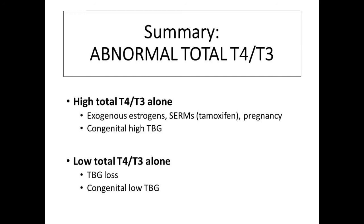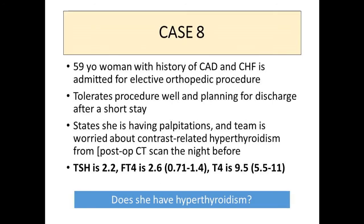Case eight or nine: a 59-year-old woman with coronary disease and congestive heart failure comes in for an elective orthopedic procedure, does well, but complains of palpitations before going home. The team is worried about contrast-related hyperthyroidism, so they check TFTs. Her free T4 is high at 2.6, but her total T4 is not high and her TSH isn't low. With iodine-induced hyperthyroidism, the thyroid hormones are high and the TSH will go down even in a short period. So does she actually have hyperthyroidism? This pattern is actually really common in hospitalized patients who have been given DVT prophylaxis — heparin can displace thyroid hormone from binding proteins and artificially elevate the free T4 assay.